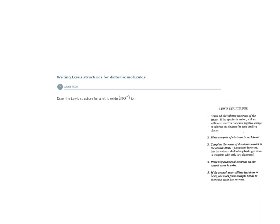Count all of the valence electrons of all of the atoms. We have nitrogen and oxygen. Nitrogen being in group 5A has five valence electrons, oxygen has six valence electrons. Total that's 11, but we also have to add one valence electron because we have a charge of negative 1. If the species is an ion, add an additional electron for each negative charge. So plus 1 equals 12 valence electrons.